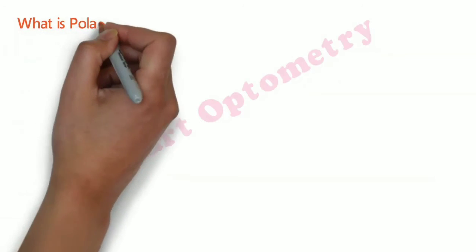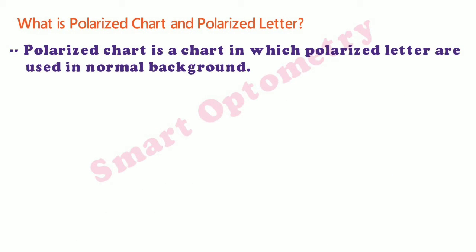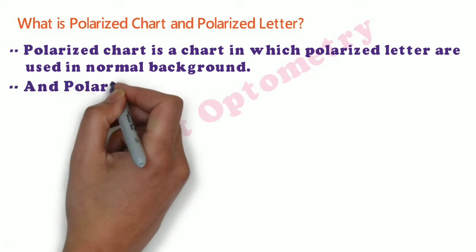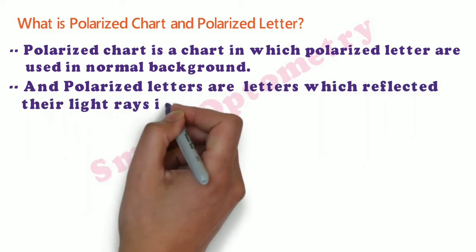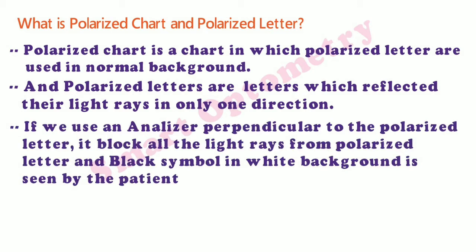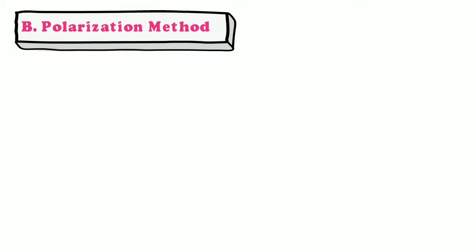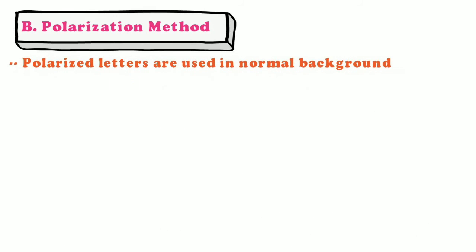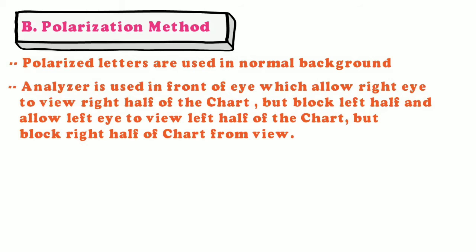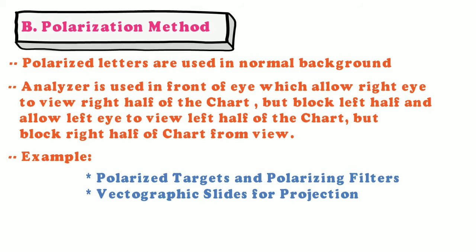A polarized chart is a chart in which polarized letters are used on a normal background. Polarized letters are letters which reflect their light rays in only one direction. If we use an analyzer perpendicular to the polarized letter, it blocks all the light rays from the polarized letter, and a black symbol on a white background is seen by the patient. In the polarization method of subjective binocular refraction, an analyzer is used in front of each eye which allows the right eye to view the right half of the chart but blocks the left half, and allows the left eye to view the left half but blocks the right half. Examples include polarized letters with polarizing filters, and back-lit graphic slides for projection.